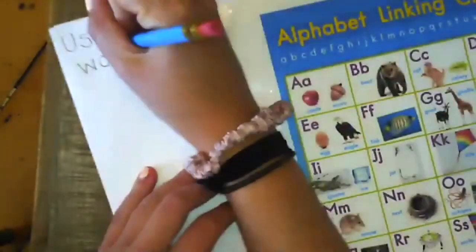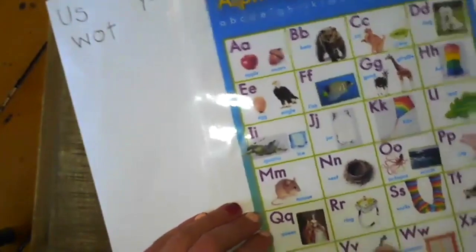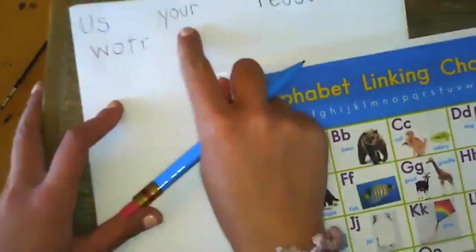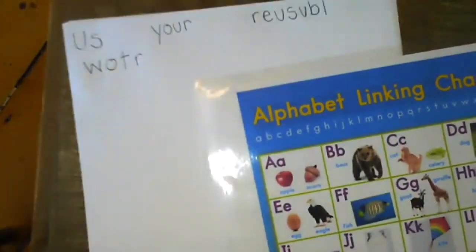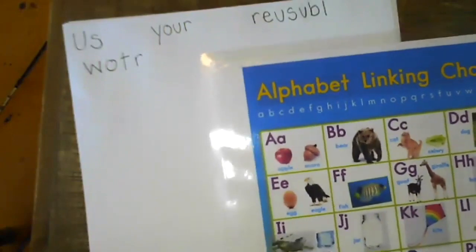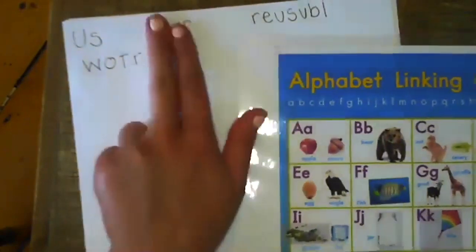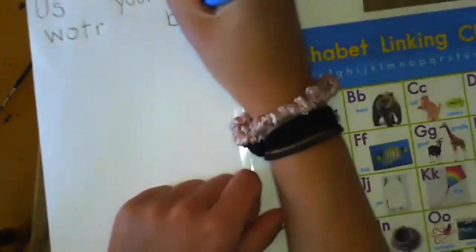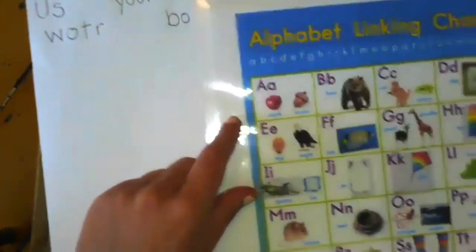What, T turtle. What, ER ring. Use your reusable water bottles. Bottles, B. Bo, O octopus. Bot, T turtle T.